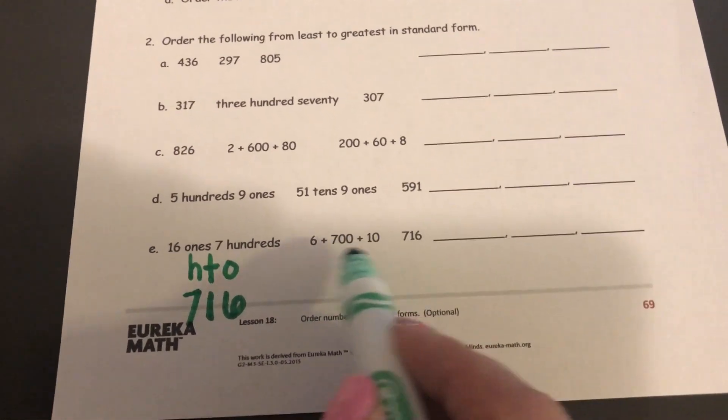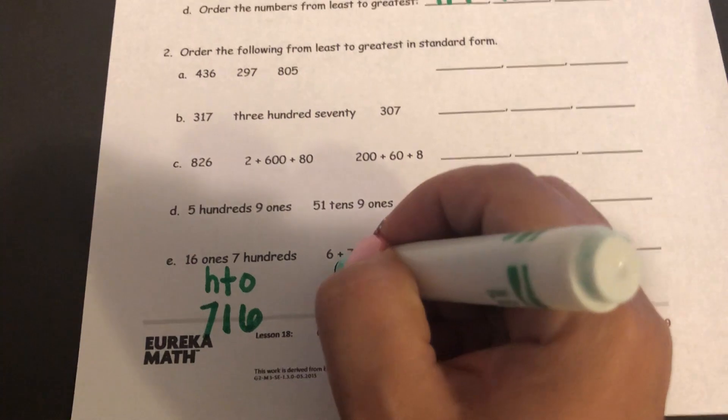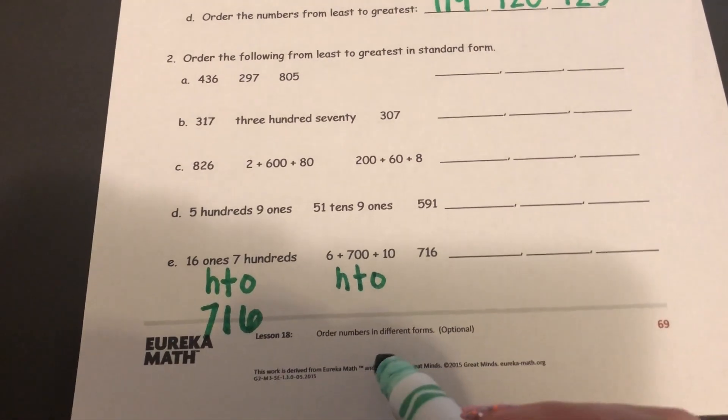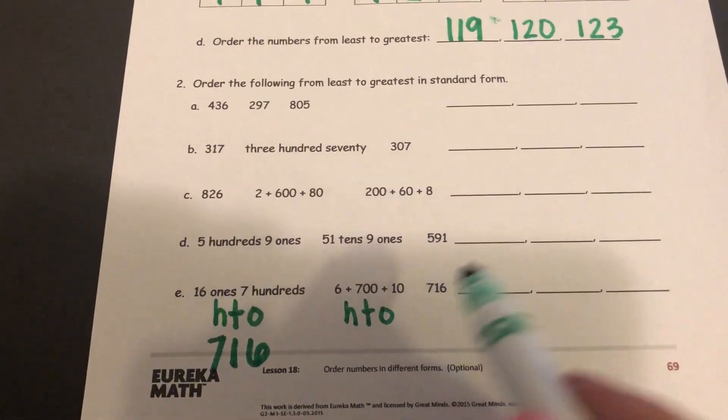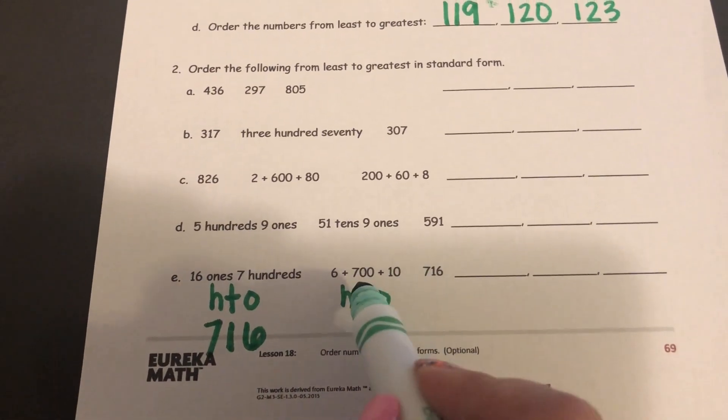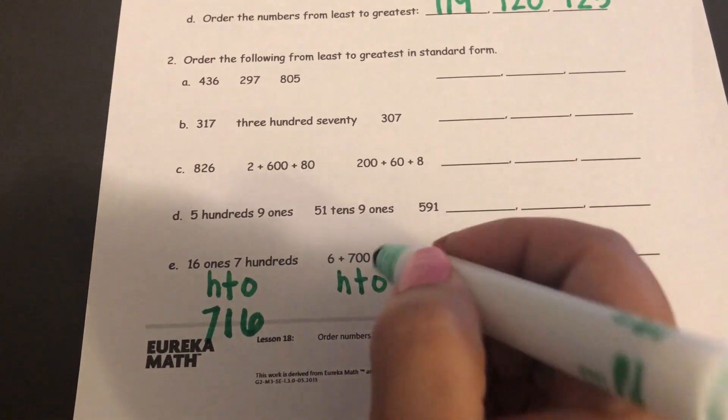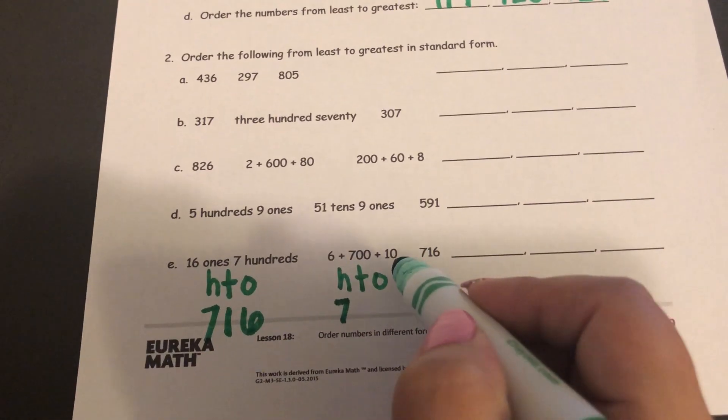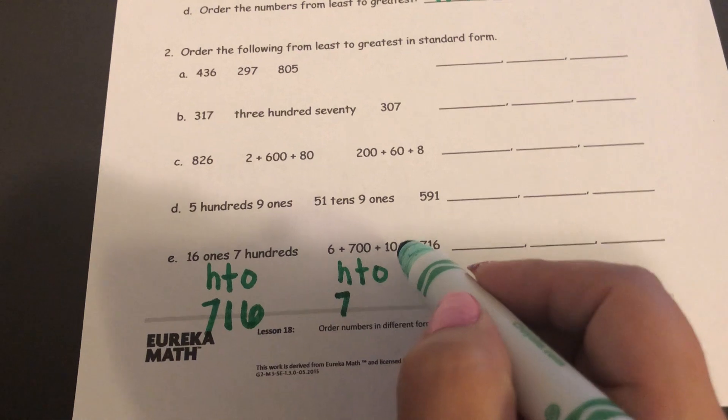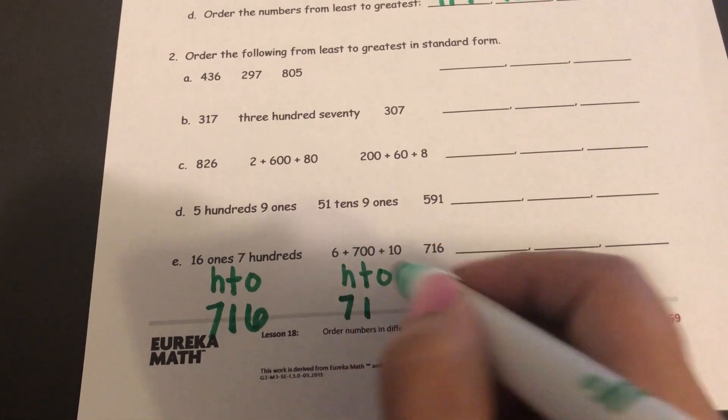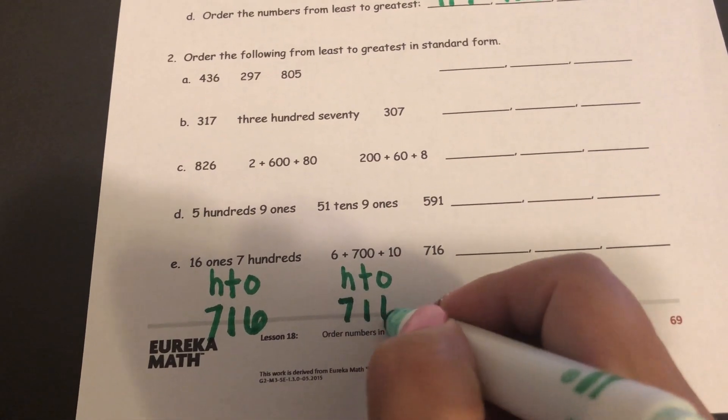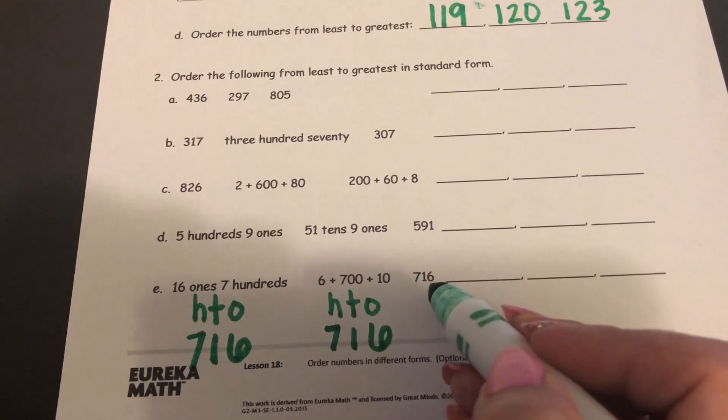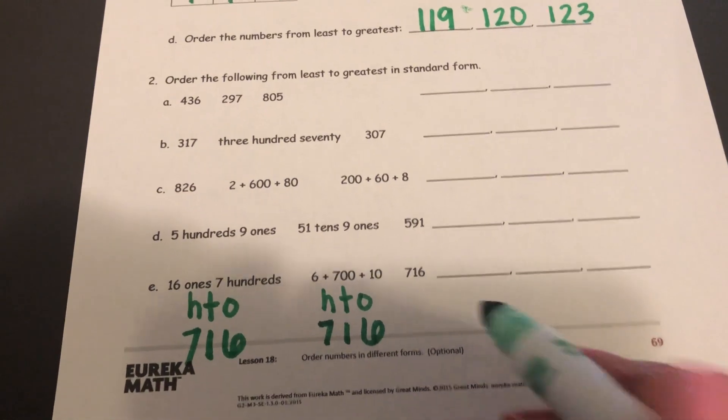Now I've got another number and this time it's in expanded form. So I'm going to write hundreds, tens, ones, so I get my place values in the right order. And it says 7 in the hundreds place, so I'll put 7 in my hundreds place. There's 1 10. So I put 1 10 and there's 6 ones. So this is also 716. And this last one is also 716.